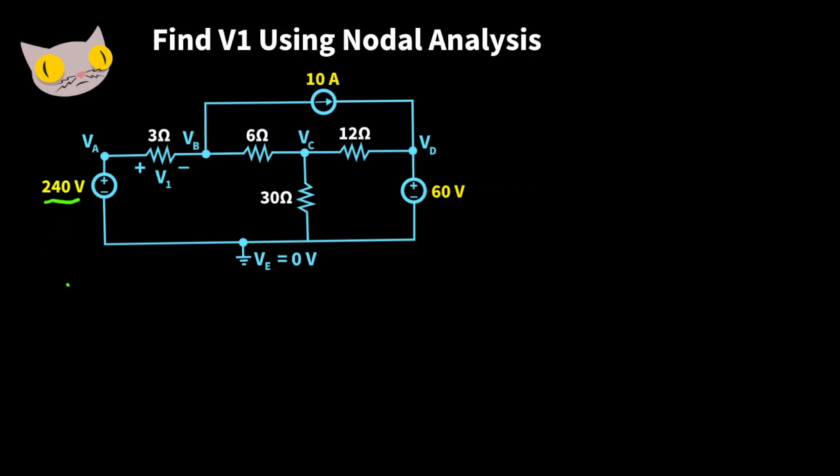For this source the high potential is VA, this node here. And the low potential is going to be the VE down there. So we can say VA minus VE is equal to 240 volts.